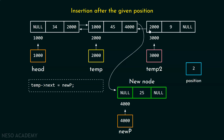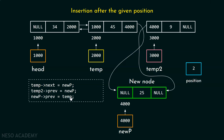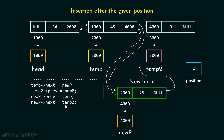Now we need to update the prev part of the next node so that it can point to the new node. We need this line of code: temp2 prev equals new p. You can see that this node is now pointing to the new node. We also need to update the prev part and the next part of the new node itself. The prev part must contain address 2000, and the next part must contain address 3000. These two lines of code handle that.